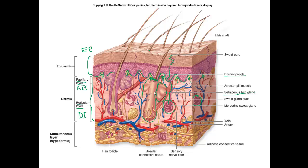Any time you have a hair follicle, you have a muscle next to it. This muscle allows you to get goosebumps or allows your hair to stand upright when you're scared, nervous, or feeling cold. This muscle is called the erector pili or the piloerector muscle. The third layer of the skin is called the hypodermis or the subcutaneous layer, and as you can see it is mostly adipose or fat tissue.